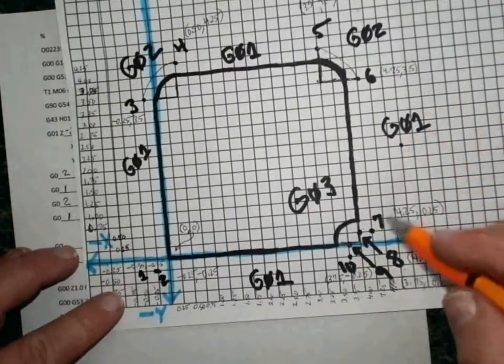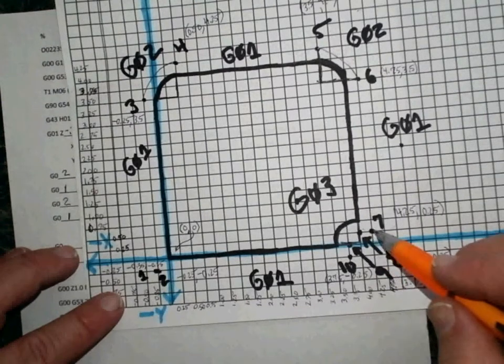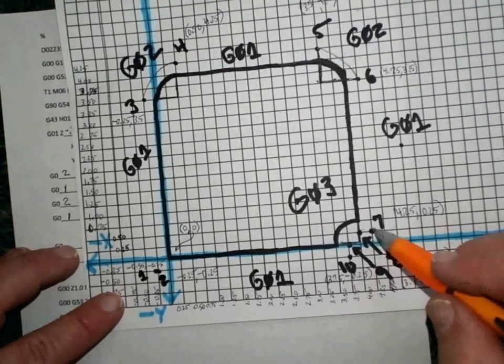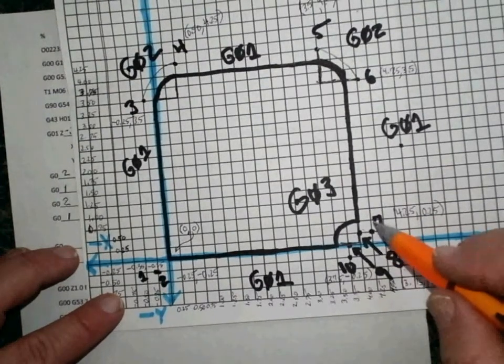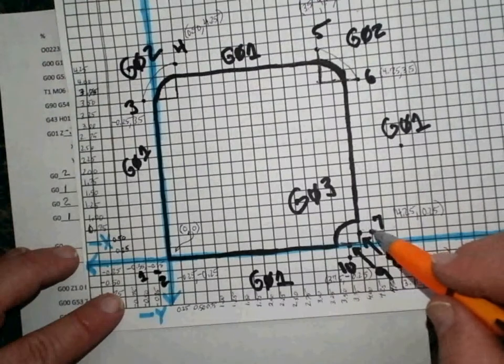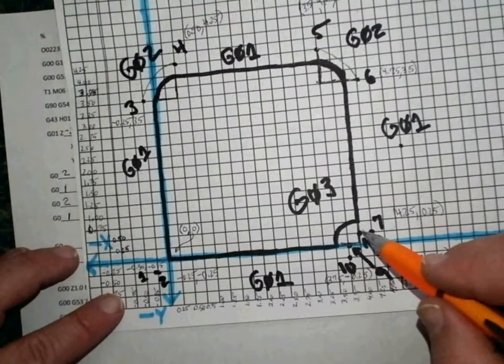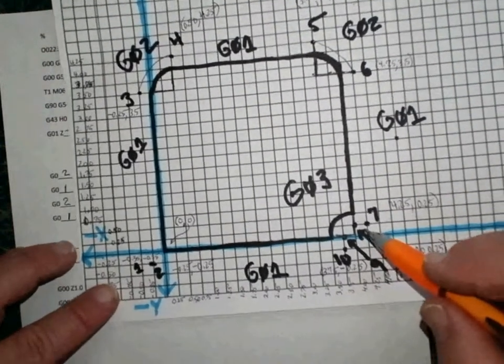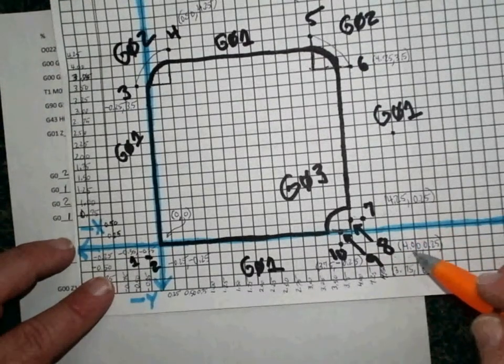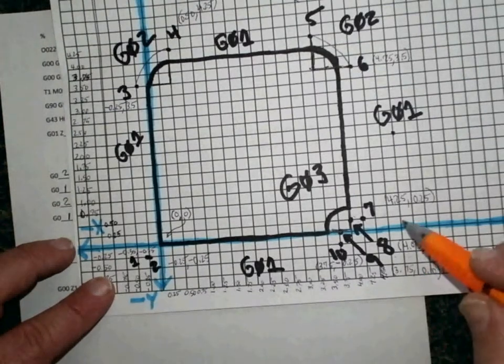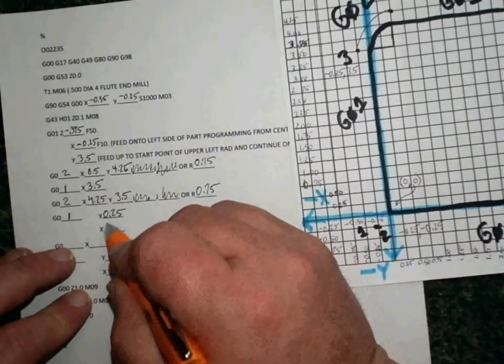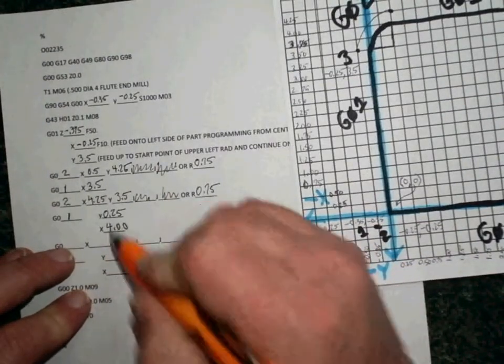Now we have one more move from 7 to 8. Again, we're not changing our Y location, we're not moving up or down when we go from 7 to 8. We're only moving from right to left. So when we move from right to left, we're moving in the X-axis. The X-coordinate for point number 8 is just 4. So we'll stick that in here as an X of 4.